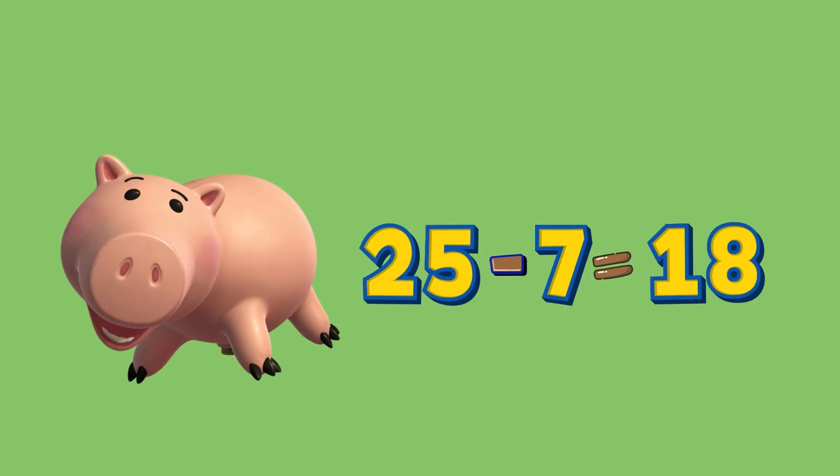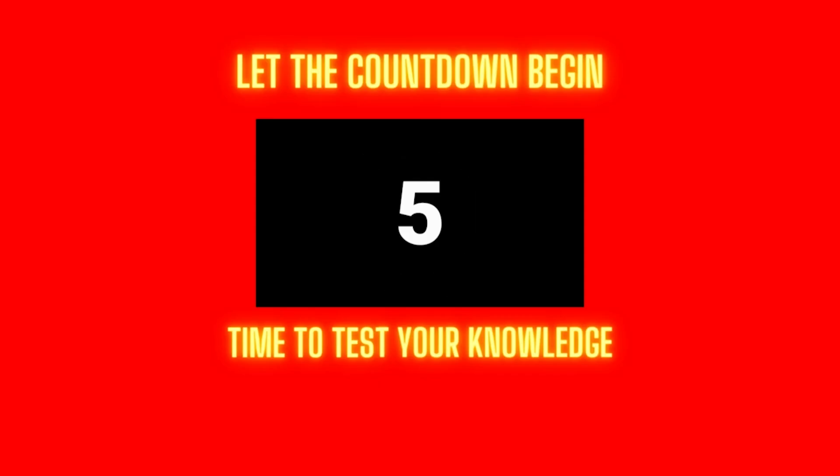Twenty-five minus seven equals eighteen. Okay friends, it's time to review what we just went over. Let's see how many you remember. Let's begin.